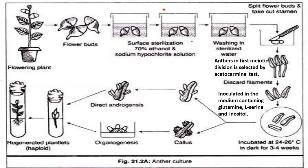In this picture, how anther culture is done will be explained. First, we select the plant of interest, then an unopened flower bud is taken. It is then surface sterilized with 70% ethanol and sodium hypochlorite solution. Next, it is washed with distilled water, the flower bud is split, and the stamens are cut. The anther in first mitotic division is selected by acetocarmine test, and the filament is discarded, keeping only the anthers.